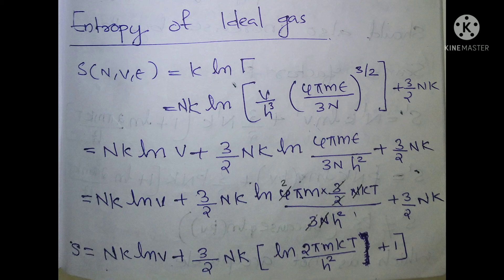For classical ideal gases, we use entropy. In this case, we have an equation: nk times V over h-cubed, times (4πmE divided by 3n) raised to the power 3/2, plus (3/2)nk. We don't know how to split it initially.